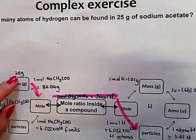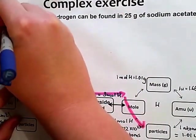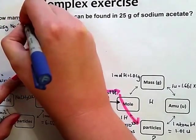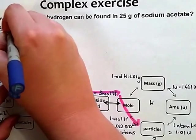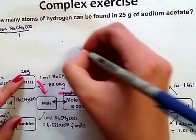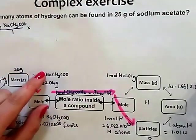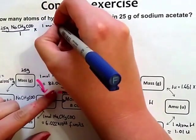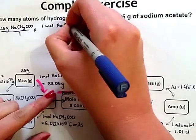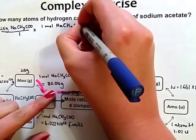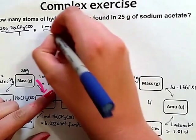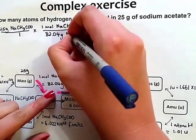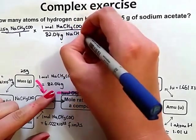Begin at the beginning. 25 grams of sodium acetate over 1. And now we're going to use the molar mass. One mole of sodium acetate is 82.04 grams of sodium acetate.